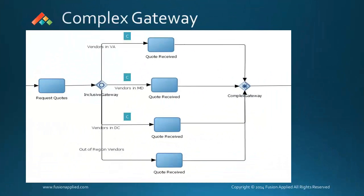Let's look at a complex gateway now. A complex gateway is similar to an inclusive gateway in that the process token can split into several paths based on which paths have expressions that evaluate to true.